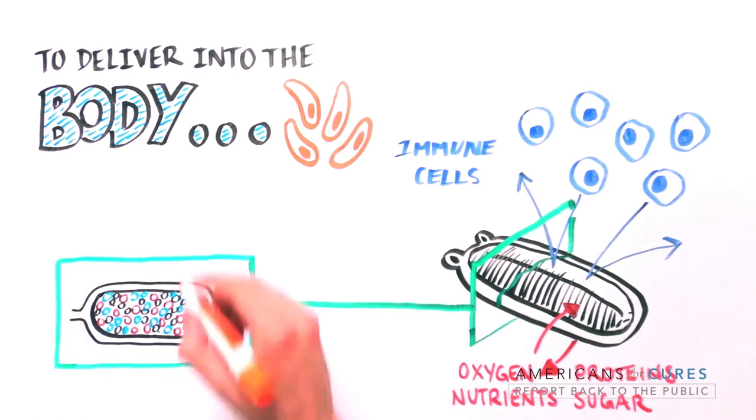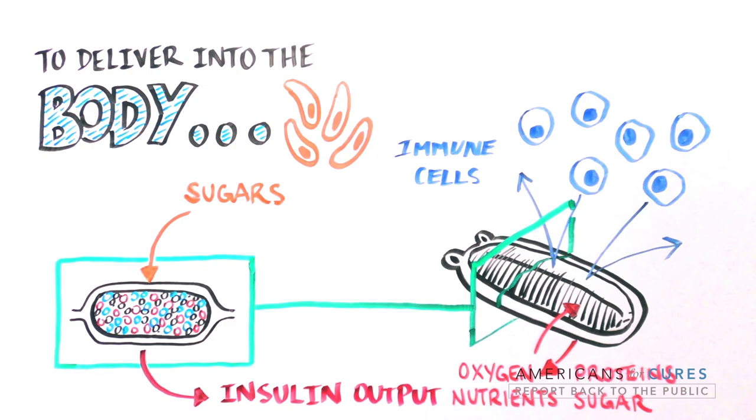Cells inside the device sense sugar and respond by producing insulin, which easily exits into the blood.